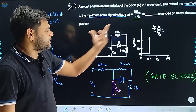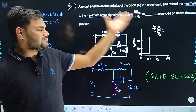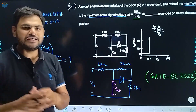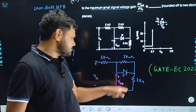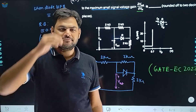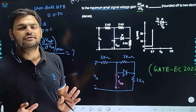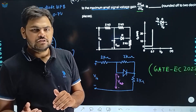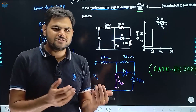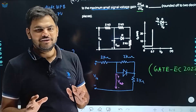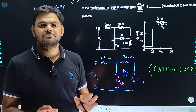Circuit को observe करते हैं। Maximum-minimum की बात सिर्फ diode कर सकता है — diode के अंदर दो संभावनाएं हैं: या तो diode ON होगा या diode OFF होगा। जब diode OFF होगा तब कुछ gain आएगा, जब ON होगा तब कुछ gain आएगा — उनमें से एक maximum होगा और एक minimum होगा। यह एक अच्छा conceptual question है।